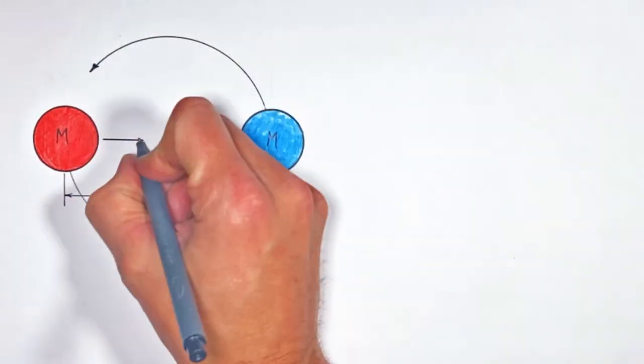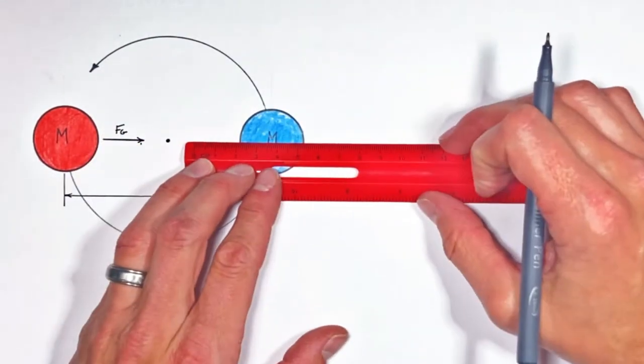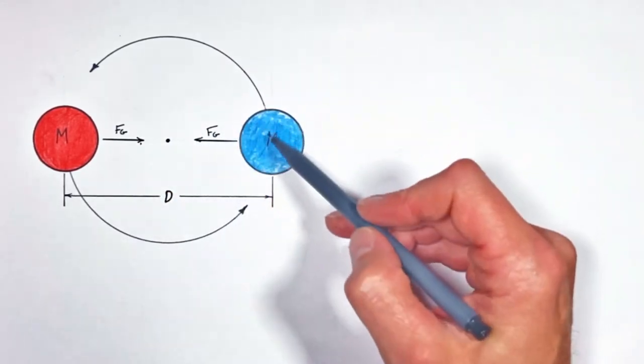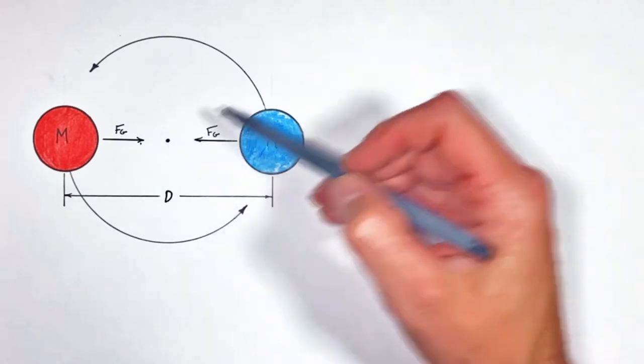The only force acting on either of these masses is the force of gravity between them, and just like with any other orbit, it's this force of gravity that's causing these masses to orbit a central point.